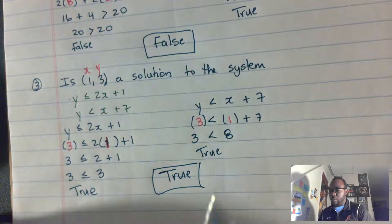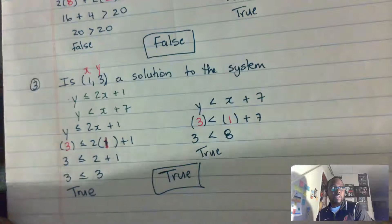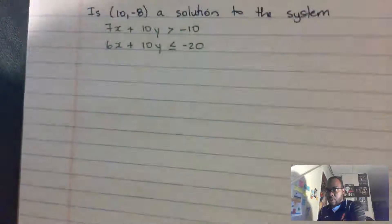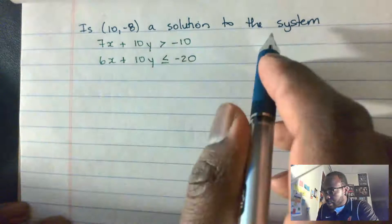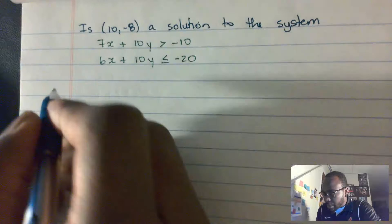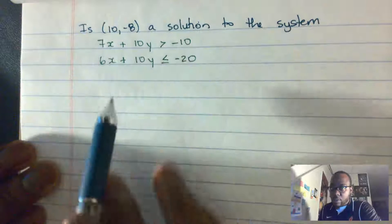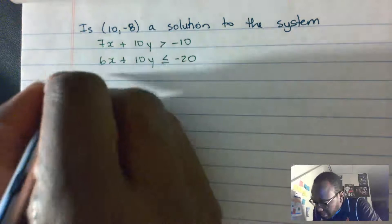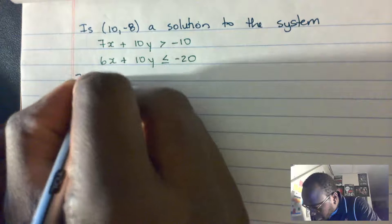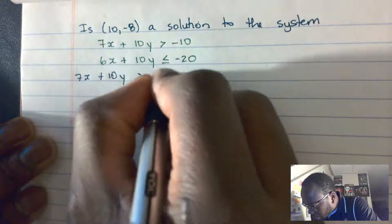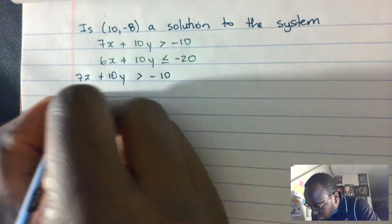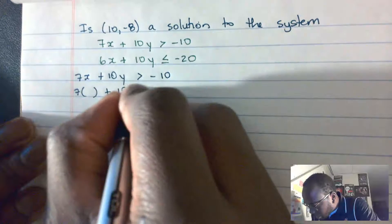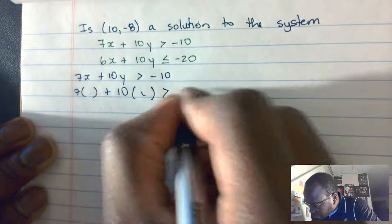On IXL you will click 'true' or 'false' for your answer. Let's look at one more example: is (10, -8) a solution to the system? Remember, for it to be a solution both inequalities have to be true. The first one is 7x + 10y < -10, so: 7 times x plus 10 times y is less than negative 10.